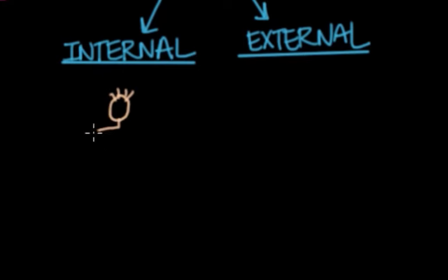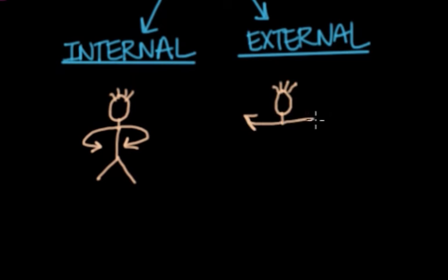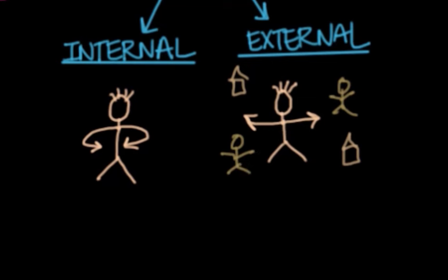Internal locus of control is when a person believes he or she can influence events and their outcomes. They attribute the results to their own traits. A person with an external locus of control blames outside forces for everything. They attribute events to environmental traits or causes. Individuals with a high internal locus of control believe that events in their life come primarily from their own actions.